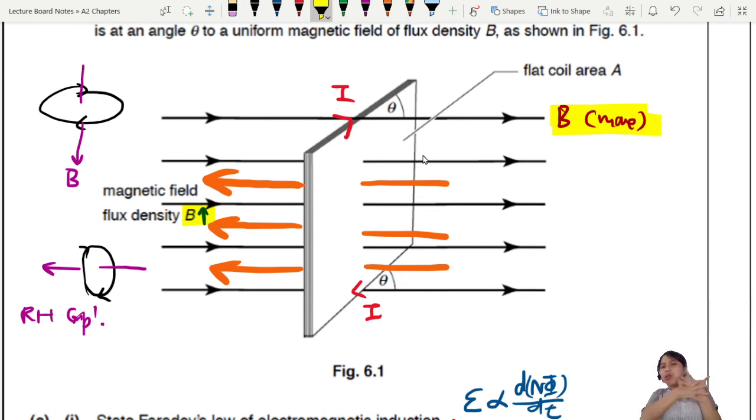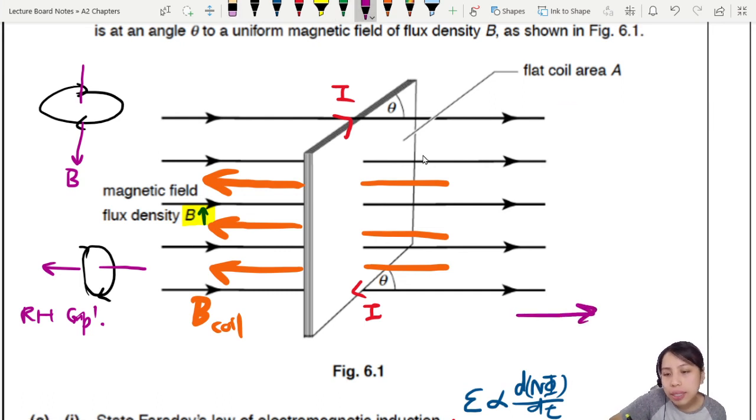So you see how this one opposes a change? When this one, B, become more, the coil says, I don't like, why does it increase so much? Please decrease this and it fights that. So it creates its own magnetic field of this coil that opposes this change that just happened. There is a change in B in this direction so it becomes stronger, more lines. Coil says, nope, I'm going to oppose that in a different direction.